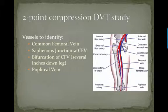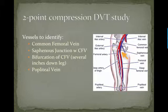The two-point compression study involves identifying the common femoral vein, its junction with the greater saphenous vein, and the bifurcation of the common femoral vein. The other vessel you need to identify is the popliteal vein in the popliteal fossa.